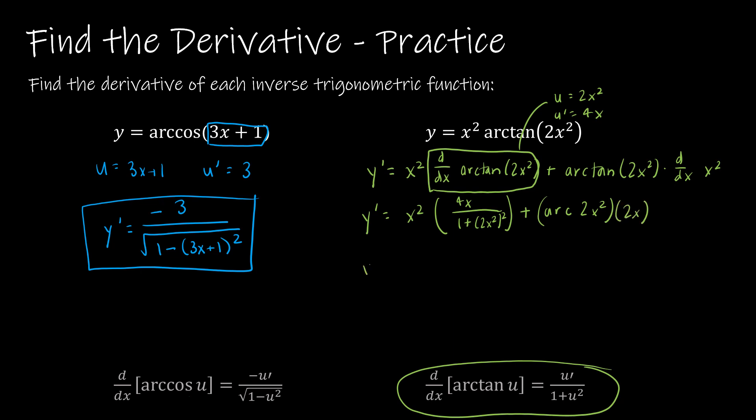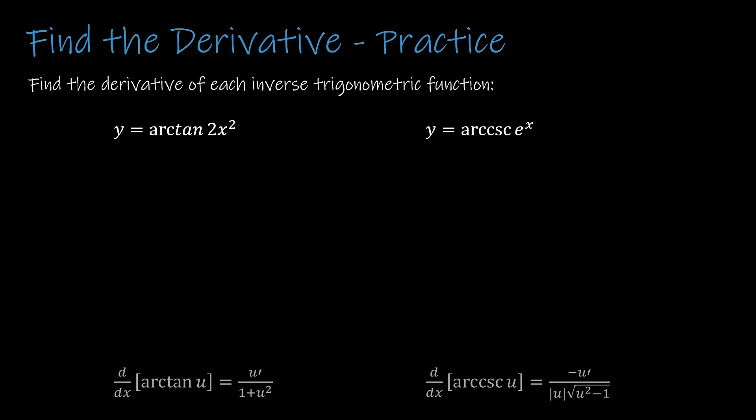So now I'm just going to simplify. I've got 4x to the third power divided by 1 plus 4x to the fourth power, and then plus 2x arctangent of 2x squared. And honestly, I wouldn't do anything more than that. I would leave it just like that. Take a look at these two practice questions on your own. And when you are ready, press play to see how you did.